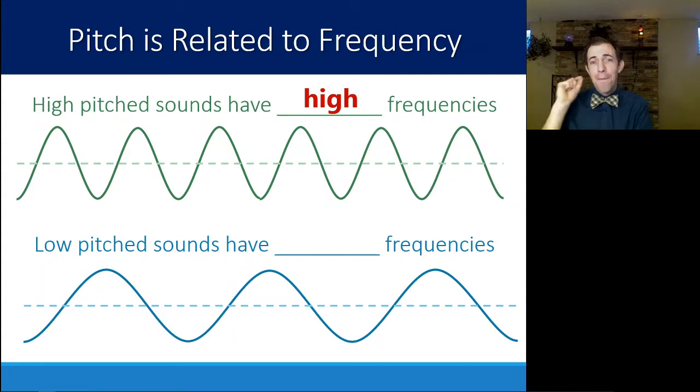A high-pitched sound, something like a piccolo or a flute, would have a very high frequency. That means there are many vibrations per second for that high-pitched sound. A low-pitched sound like a bass drum or a tuba will have a very low frequency. And that is what we're experiencing as sound.